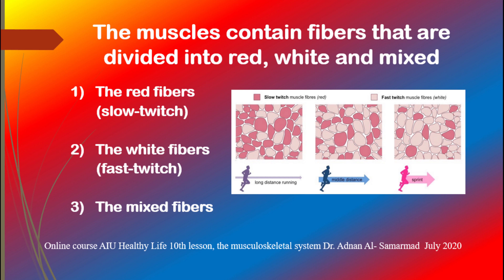The white fibers, also called fast twitch, divided into A and B. With 80% fast twitch fibers, they occur in 10% of people and have little myoglobin, which is why oxygen uptake is not so easy. They draw energy from anaerobic sources so that energy is released immediately, but for a short time, so that they can perform fast and strong movements for a short time.